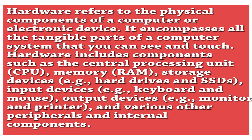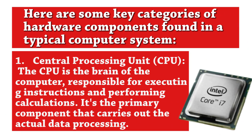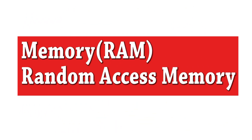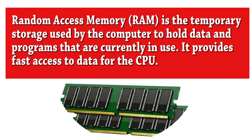Hardware also includes input devices like keyboard and mouse, output devices like monitor and printer, and various other peripherals and internal components. Here are some key categories of hardware components found in a typical computer system. The central processing unit (CPU) is the brain of the computer, responsible for executing instructions and performing calculations.